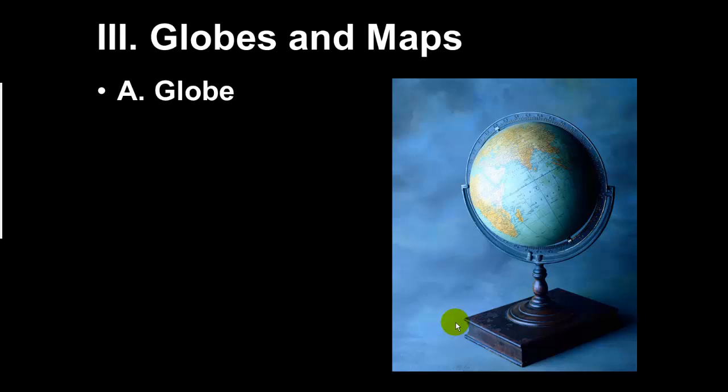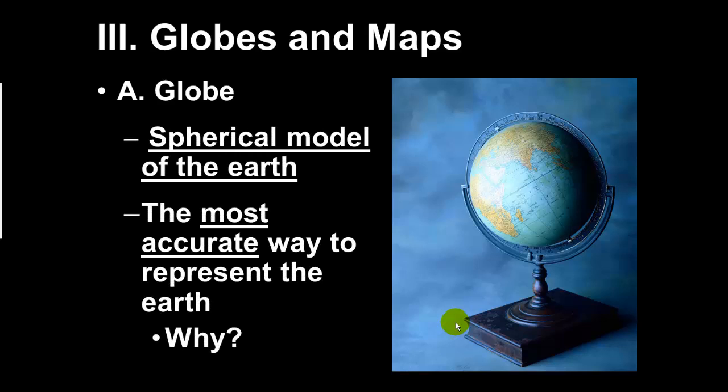This picture represents a globe. Most of us are familiar with what globes are. They're just like models of the Earth in a spherical or more of an egg-shaped cyclical form. Globes are the most accurate way to represent the Earth because the Earth is shaped like a basketball or egg form. Globes are a close representation of the actual shape of planet Earth.